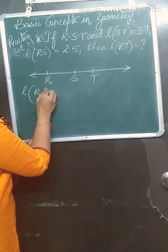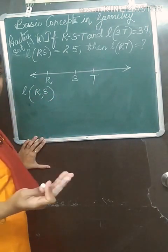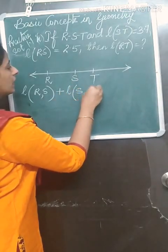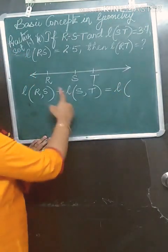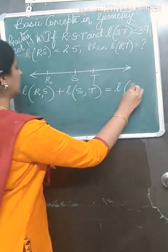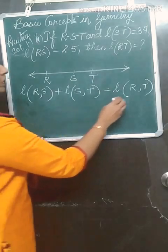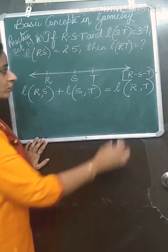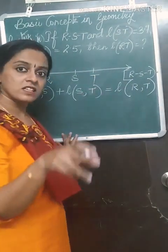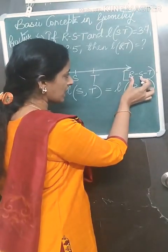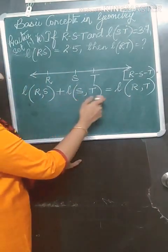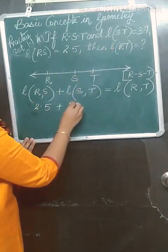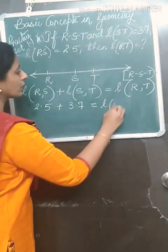Look at the figure and write down the lengths. By the betweenness property, distance between R and S plus distance between S and T is equal to distance between R and T. Substitute the values: RS is 2.5 plus ST is 3.7, which is equal to length of RT.